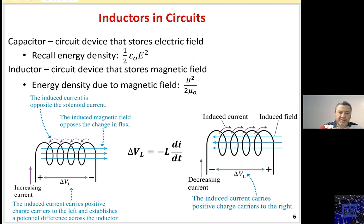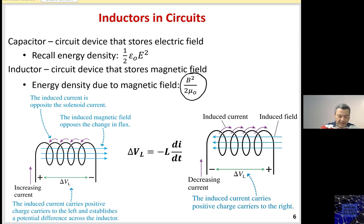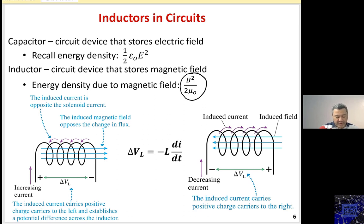The energy stored in a capacitor was ½ε₀E². In the inductor, energy is stored in the form of the magnetic field and is given by B² / (2μ₀). Looking at this inductor with an increasing current flowing in one direction, the increasing current results in an opposing induced current trying to maintain the original current. To oppose this increase, the induced current flows in the opposite direction, and by the right-hand rule, this produces an opposing magnetic field.